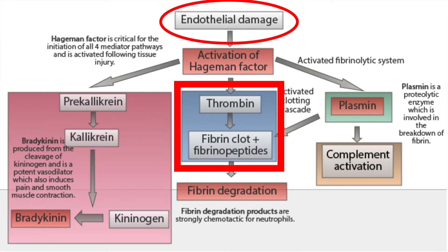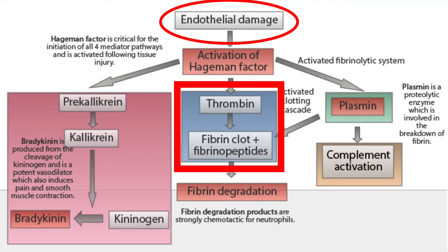There are four plasma enzyme mediator systems that occur when there is damage to the endothelium. These systems are very complex and involve a variety of factors and signaling cascades. When there is endothelial damage, this will trigger the activation of the Hageman factor, a critical component for the initiation of all of these systems.